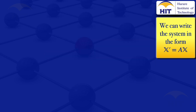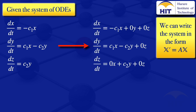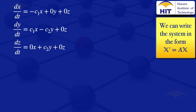Moving on to the next system, we have three equations: the derivative of X, Y, and Z with respect to T. To clearly see the matrix, it's better to write each equation in full including zeros. So the system becomes: X' = minus C1·X + 0·Y + 0·Z, Y' = C1·X minus C2·Y + 0·Z, and Z' = 0·X + C2·Y + 0·Z.